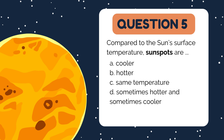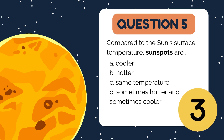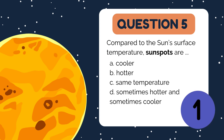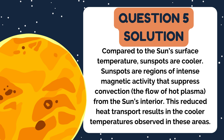Let's heat things up with this one. Compared to the sun's surface temperature, sunspots are: A. Cooler, B. Hotter, C. Same temperature, D. Sometimes hotter and sometimes cooler. The answer is A. Cooler. Sunspots are regions of intense magnetic activity that suppress convection — the flow of hot plasma from the sun's interior. As a result, less heat reaches these areas, making them appear cooler than the surrounding surface. Even though they're cooler, sunspots are still incredibly bright and hot by earthly standards.